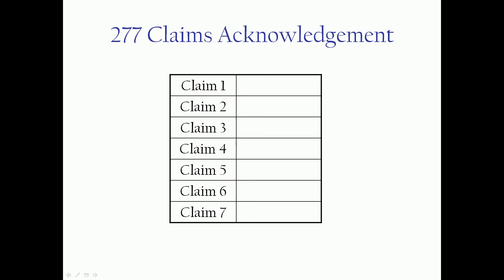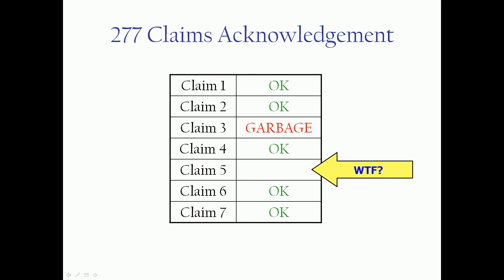It looks something like this. Maybe you submitted seven claims and you should get back a one-for-one file in most cases — so if you submit one 837 claims file with seven claims, you should get one 277 in most cases. Claims one, two, four, six, and seven have been accepted and will pass into adjudication. Claim number three was rejected and thrown in the garbage. And claim number five is missing, which brings up the age-old question: where's this file? That is a reconciliation process — something very beneficial to you as the provider.